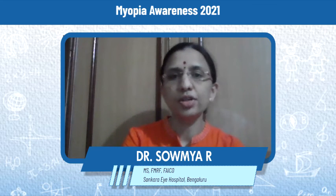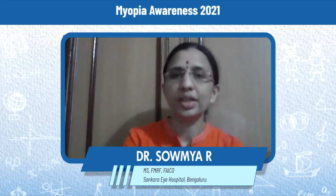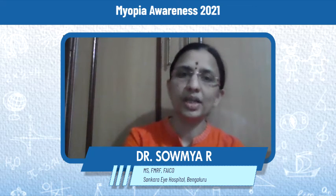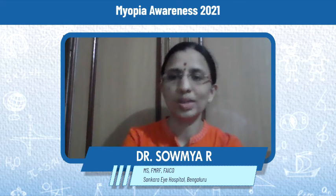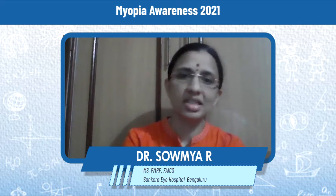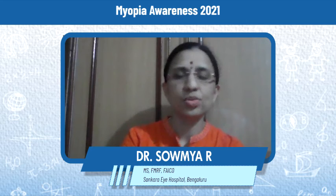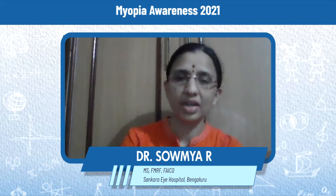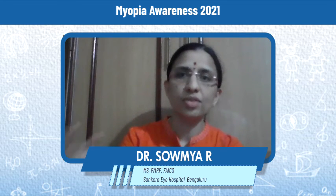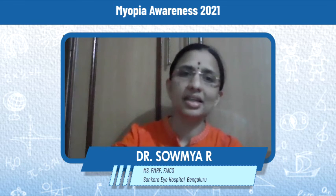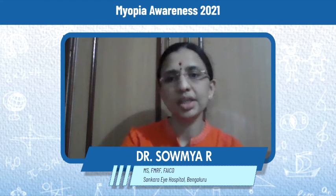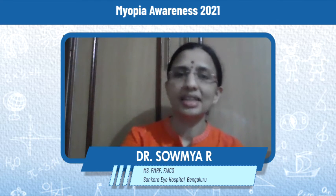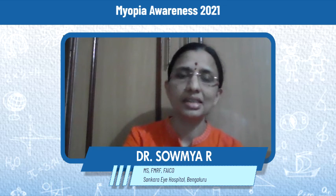It is very important to follow the 20-20-20 rule: after 20 minutes of near activity, the child takes a break of 20 seconds where they close their eyes, then the next 20 seconds looks at something far away by opening the window and staring at a distance, and then gets back to activity. This 20-20-20 rule helps in maintaining the eye health of the child, especially with online classes.